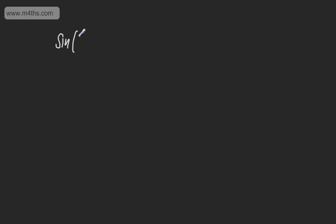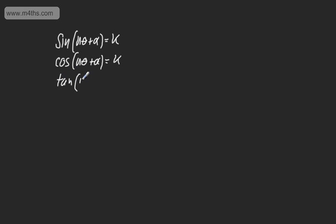In this video, we're going to look at solving some more trig equations. We're going to look at equations that can be written in the form sine of n theta plus alpha equals k, cos of n theta plus alpha equals k, and tan of n theta plus alpha equals k. For example, sine of 2 theta equals 0.4, cos of 3 theta equals minus 0.6, or tan of one-half theta equals 2.